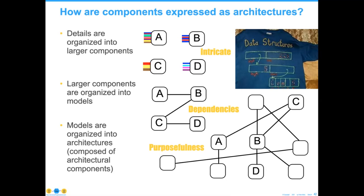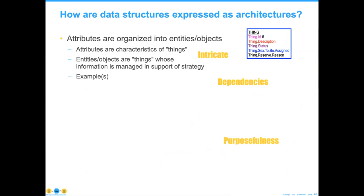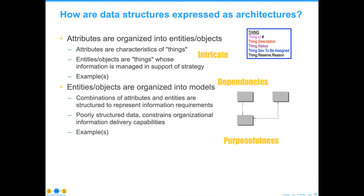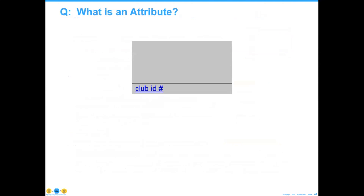We inject the component of purposefulness here — there is no point at all in building something if it doesn't have a purpose. In the data world, the attributes are organized into entities and objects. Attributes are characteristics of business things about which we are going to create, read, update, and delete information. Dependencies then gets us into the models — the combination of the attributes, the combination of the ways entities are linked. Poorly engineered structures are one of the main things that causes us problems. Finally, the models are organized into architectures.